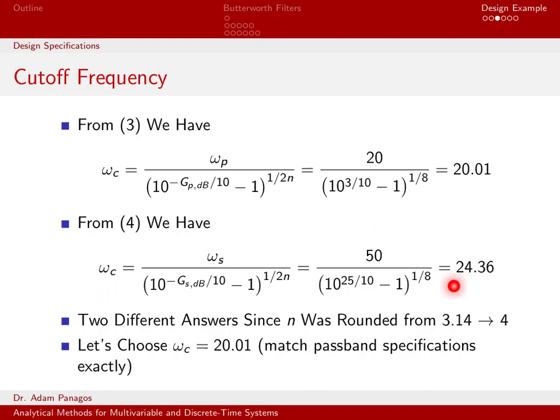So at this point, we kind of have a little bit of a dilemma. This actually says a cutoff frequency of 20.01 and a cutoff frequency of 24.36. These are different numbers. The reason they're different is because we didn't use the exact answer for n. We had to round it. We're not allowed to use a fraction. We had to round it to the integer four. And because of that, we're not going to be able to meet our specifications exactly.